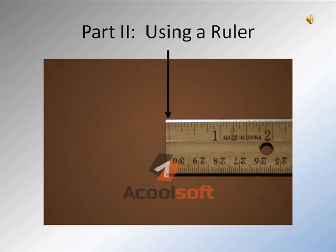The next part is properly using a ruler. If you look at the arrow on this picture, the main key is to start measuring at the line, not at the edge of the ruler. This is a common mistake that many people make. The other mistake is not using the proper side — please make sure that you use the inches side, which is the side that goes from one to twelve.